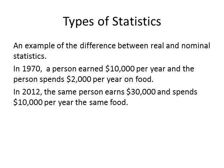The question we have to ask: in which year were they better off? If we focus on nominal values, it's clear that they were better off in 2012 because they are earning more money — $30,000 in 2012, which is much greater than $10,000 in 1970. However, if we look more closely, we would notice that in 1970 the individual's food expenses only took up 20% of their income, but in 2012 it took 33% of their personal income.